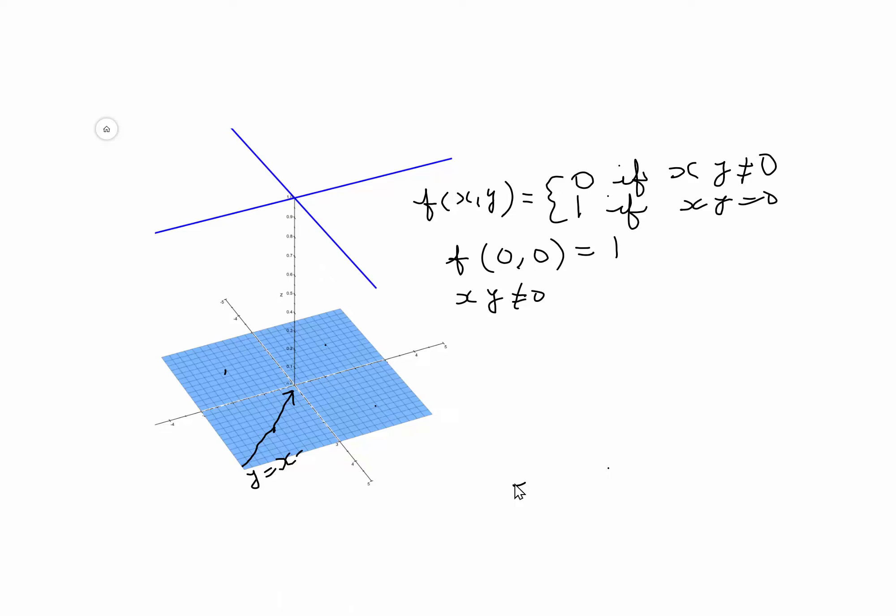What would happen is that f, if I take this route, will approach 0. Why? Because it's 0 all throughout. So what did you see?